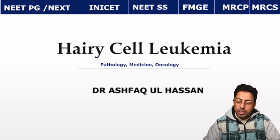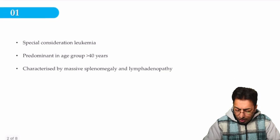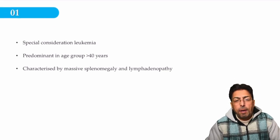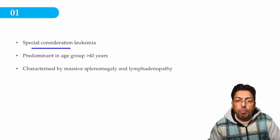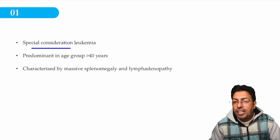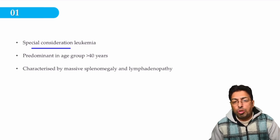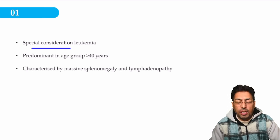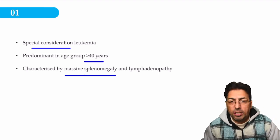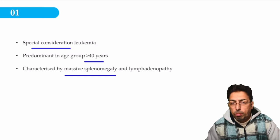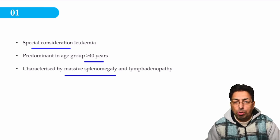Special concentration is needed for this condition, which is basically a misnomer. It affects usually the elderly — more than 40 years of age — and it is usually more common in males, who are affected four times more than females. One very important clinical feature to remember is splenomegaly: enlargement of the spleen. This is one clinical condition in which a patient might present with massive splenomegaly.